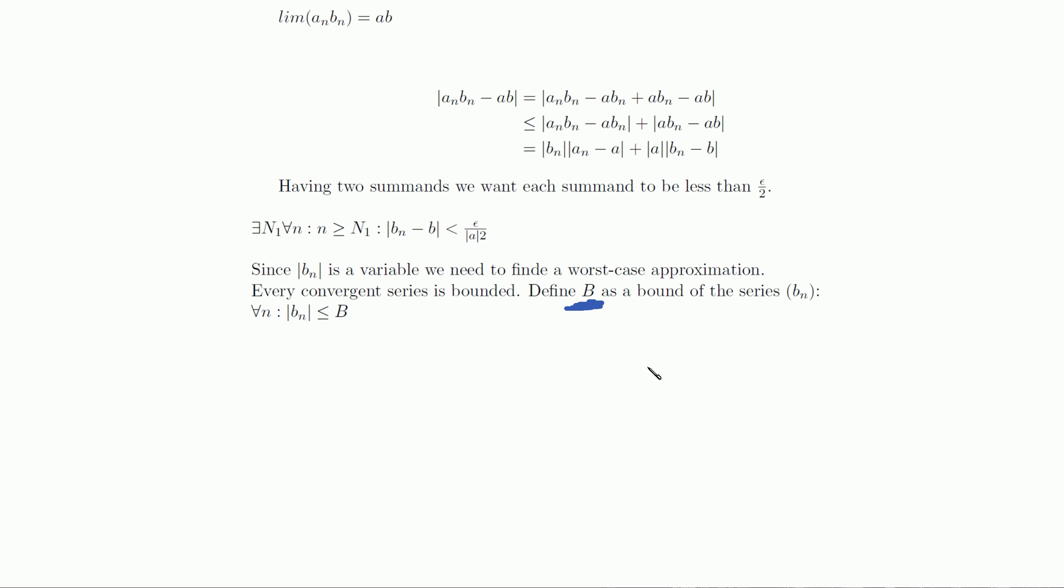Realize how we don't know where the sequence comes closest to its bound. We can't just set n to 1 or infinity. Our sequence might be closest to its bound at some arbitrary position.